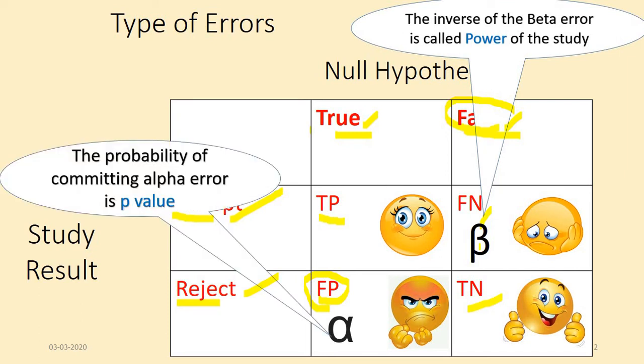The probability of committing alpha error is called p-value. As the probability of committing an alpha error is close to 0 or the p-value is close to 0, the chance of you rejecting the null hypothesis when it is actually true is going to be nil.